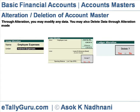To modify data, take the cursor to the desired field and alter the data of any field of the master record — group or ledger. You cannot alter the parent group of any reserved account master, that is a reserved account group or reserved account ledger. Press Alt+A to save the changes made.